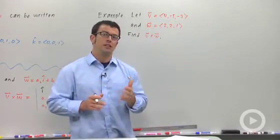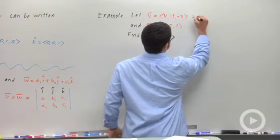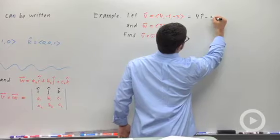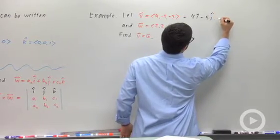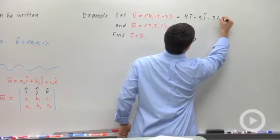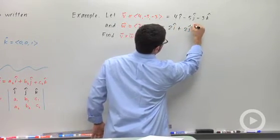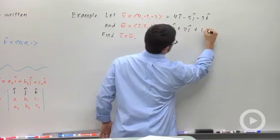I first have to put these in I, J, K form. That's really easy because all you have to do is fill in the 4I minus 5J minus 3K. Same for this, 2I plus 2J plus K.